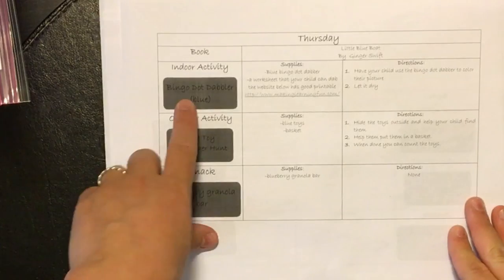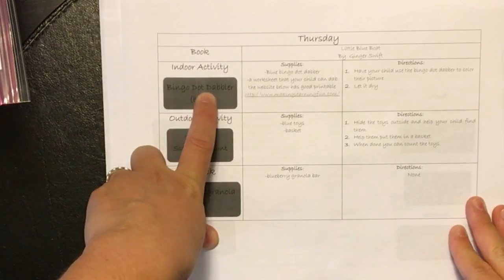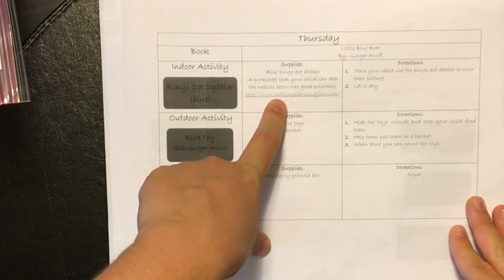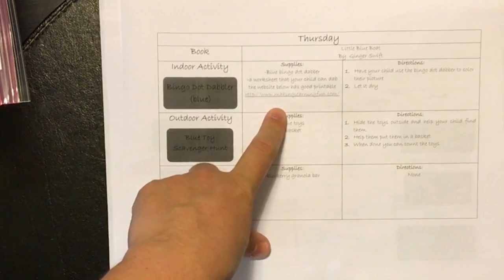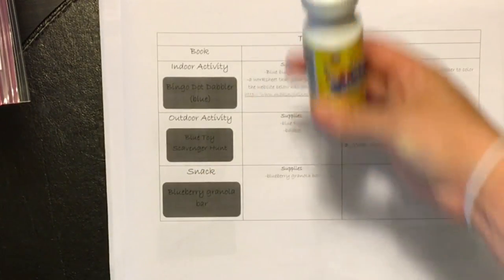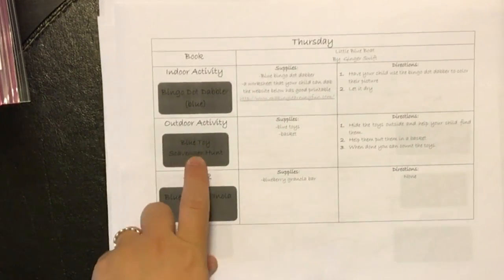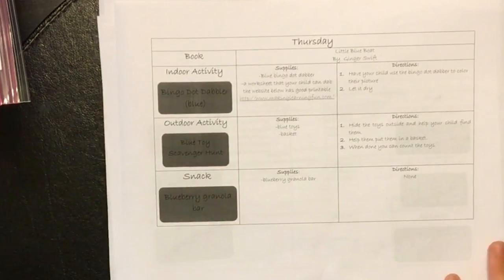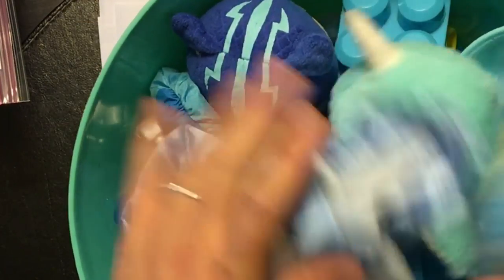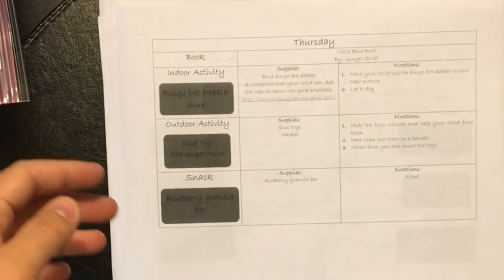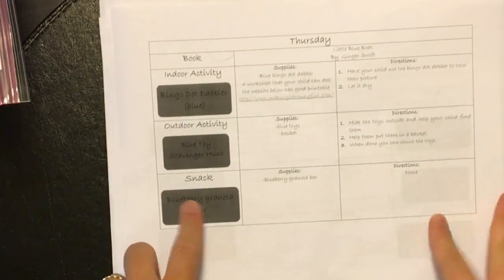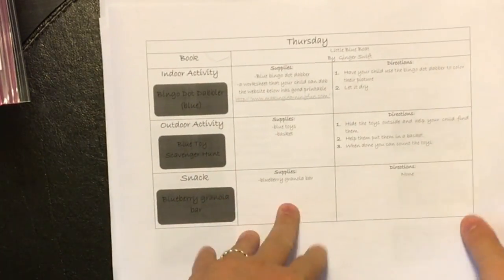For Thursday, indoor activity will be a bingo dot dabber, and I forgot to print out this worksheet. I haven't... It's going to be like a fish. And then he'll dab the dots bingo dabber. The outdoor activity is blue toy scavenger hunt, so I'll take some of these toys, and I will hide them outside, and he's going to have to go find them. I won't do the whole bin, of course. I'll just do a few of them. His snack that day is a blueberry granola bar.